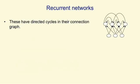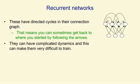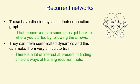Recurrent neural networks are much more powerful than feed-forward neural networks. They have directed cycles in their connection graph. What this means is that if you start at a node, or a neuron, and you follow the arrows, you can sometimes get back to the neuron you started at. They can have very complicated dynamics, and this can make them very difficult to train. There's a lot of interest at present in finding efficient ways of training recurrent nets, because they are so powerful if we can train them.